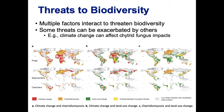It would be a lot easier if fixing biodiversity, or even conservation of a particular species, involved dealing with only one threat. Unfortunately, most species have more than one factor causing them to decline — sometimes one factor in one part of their geographic range and another factor elsewhere, and sometimes these different factors interact and have other consequences.